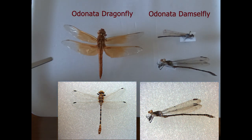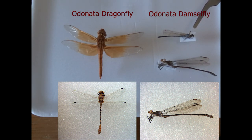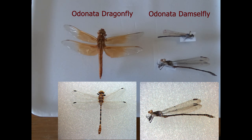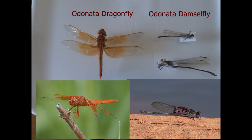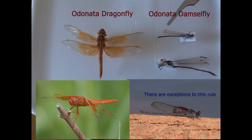Comparing the dragonfly to the damselfly — both in the order Odonata — the dragonfly always has its wings outstretched like an airplane. So if it lands on cattails, a shrub, or a blade of grass, it will always have its wings outstretched. The damselfly, on the other hand, will not have its wings outstretched at rest; instead, they'll be folded over the top of the abdomen. You also notice the eyes are not as large on the damselfly.